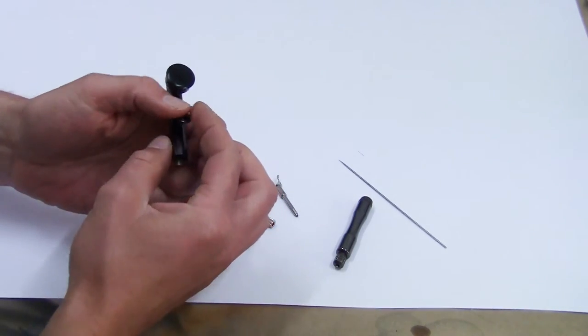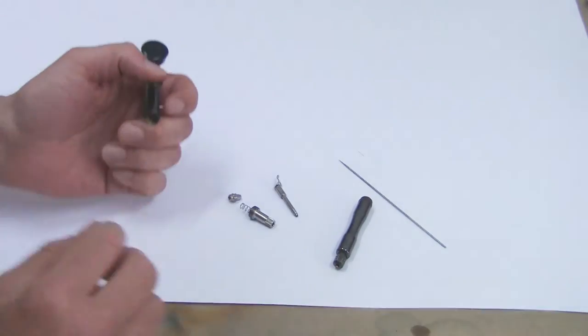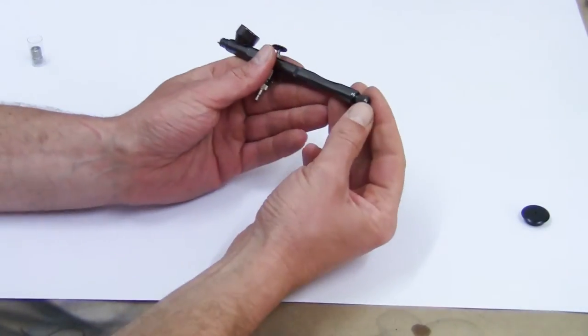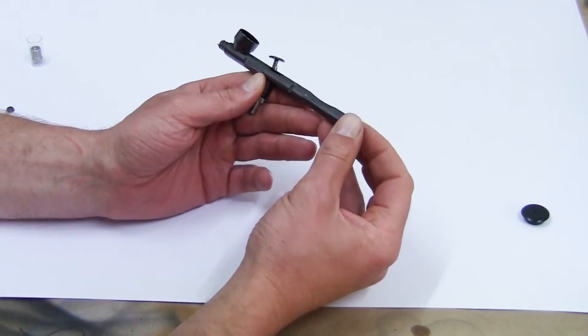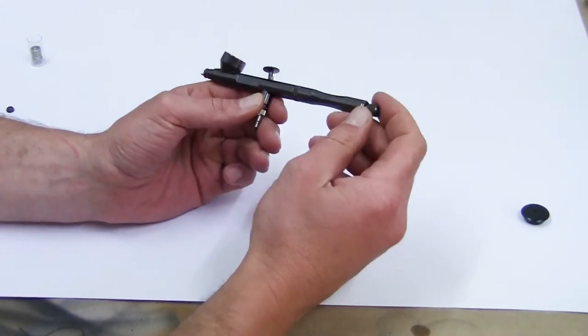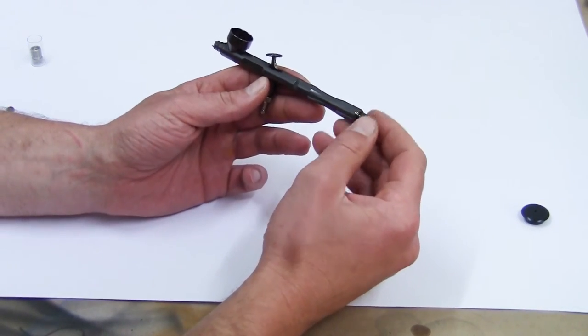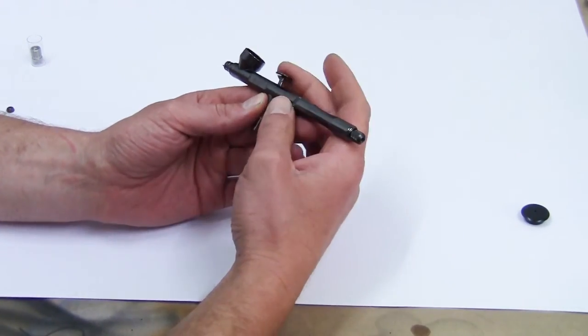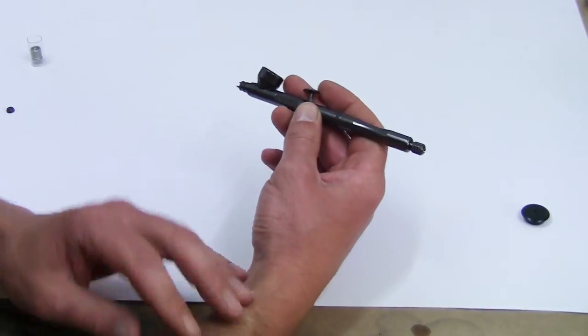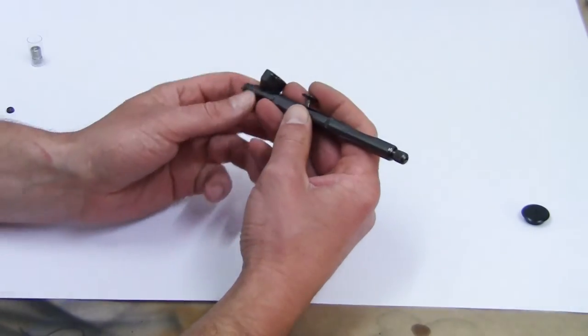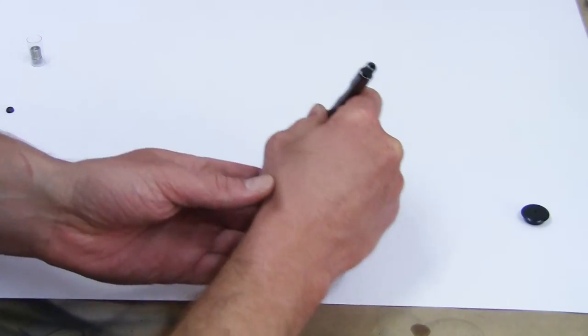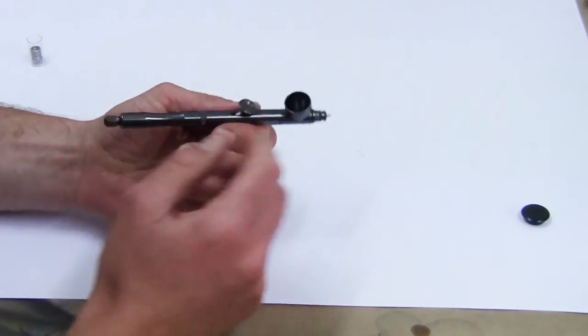We have a needle limiting screw. This is screwed in and you can limit the needle travel. This is useful for fine work or when painting small models in model building, if you have problems with the adjustment range or are afraid of releasing too much paint. Also interesting when you want to paint fine lines, so you don't pull back too far.